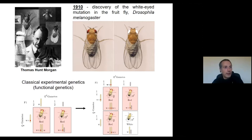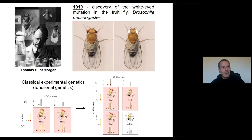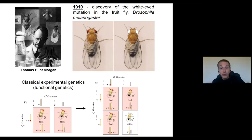Now we started to understand this. This was the beginning of molecular genetics — we started to understand that information is stored in chromosomes. Chromosomes have DNA, and DNA has sequences. Those sequences are part of the code.